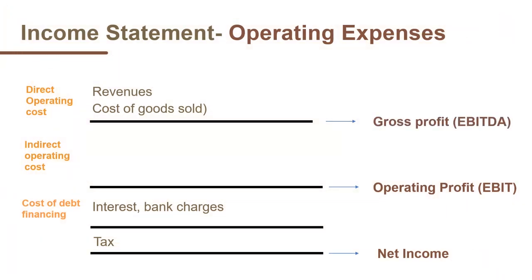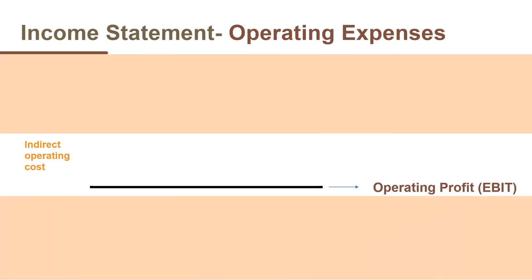SG&A are operating expenses not directly associated with the production or procurement of the product or service. This includes management salaries, payroll, wages, commissions, meals and travel expenses, stationery, advertising, and marketing expenses. Warren looks for companies with consistently low spending on SG&A. As a percentage of gross profit, SG&A spending under 30% is considered good. Companies that do not have a durable competitive advantage have wide variations in their SG&A. In general, Warren stays away from companies with high SG&A expenses.